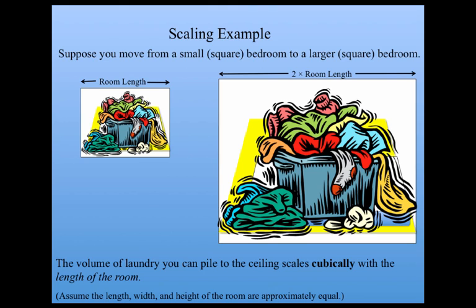Well, the volume of laundry you can pile up to the ceiling scales cubically with the length of the room. That is, the volume of laundry is proportional to the room length cubed. That's because volume scales as length cubed. And you can see that by looking at this plot. The volume of laundry goes up very quickly as the room length increases. So if you double the size of your room, then you'd be able to fit eight times the amount of laundry, because eight is two cubed.